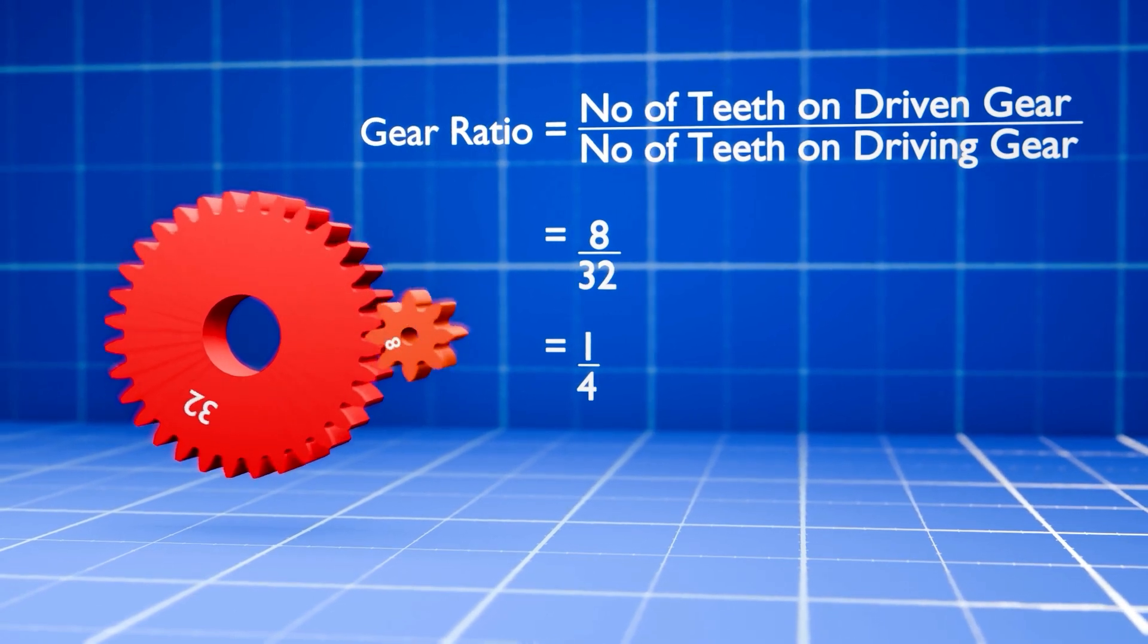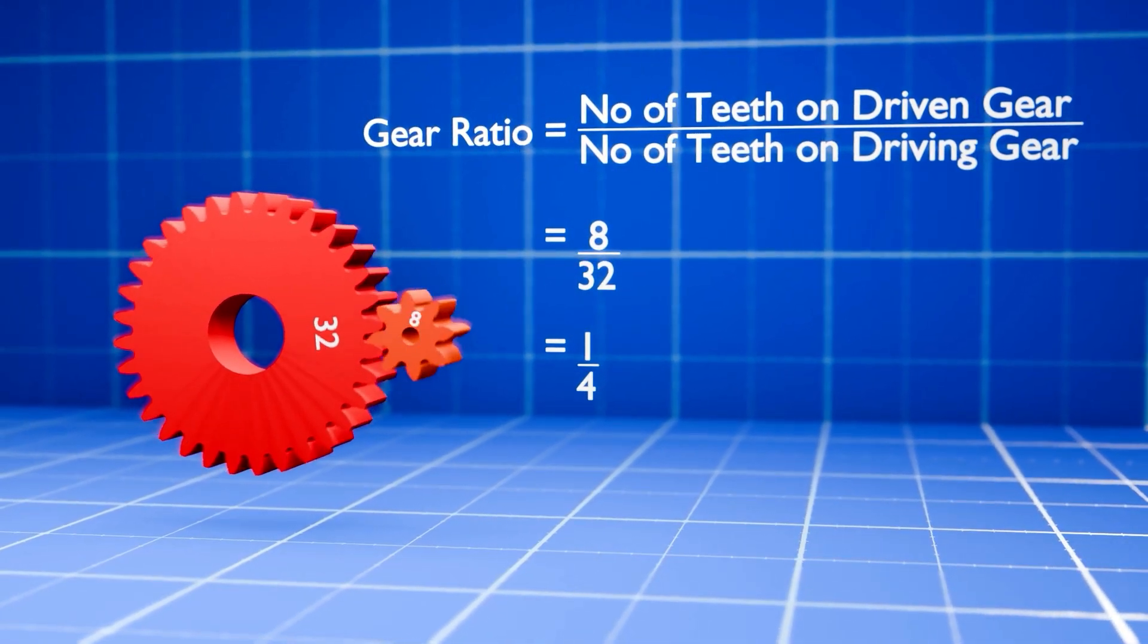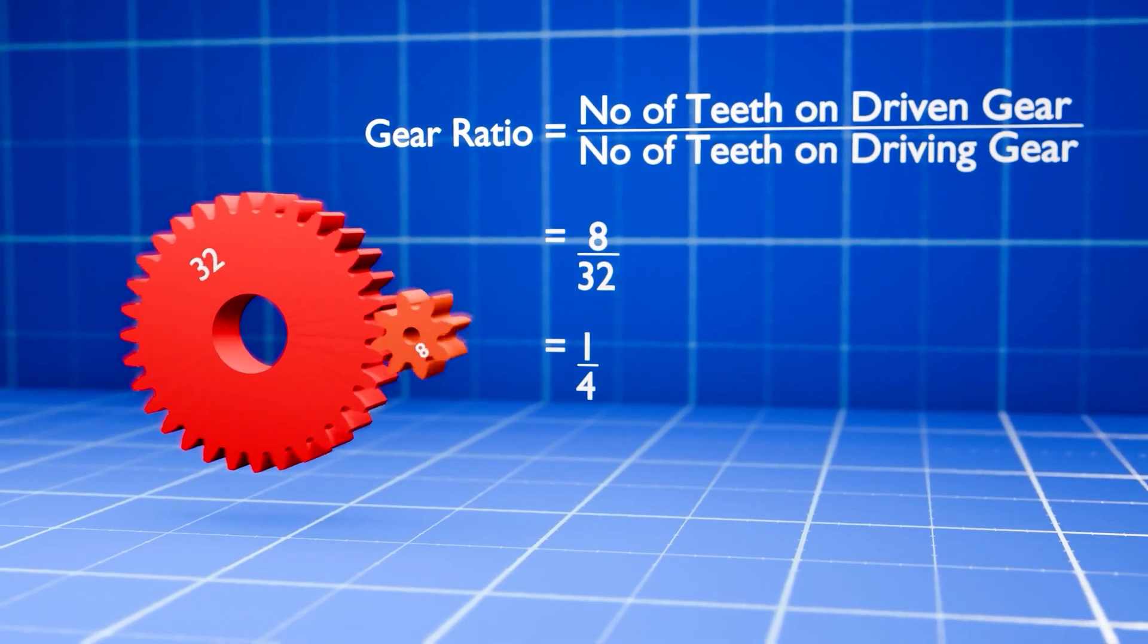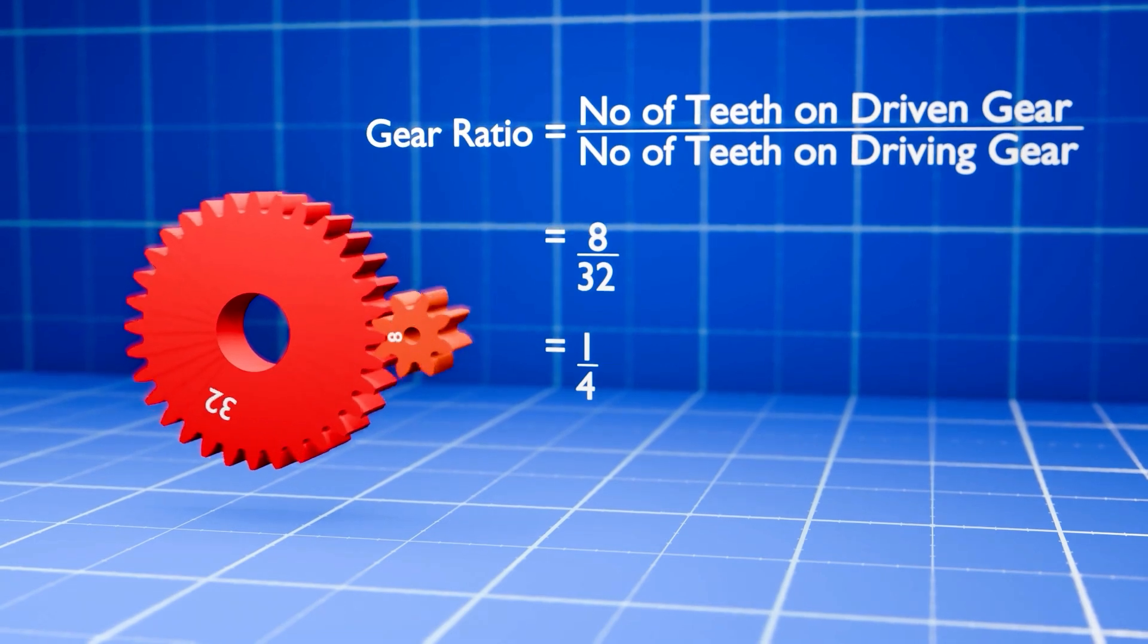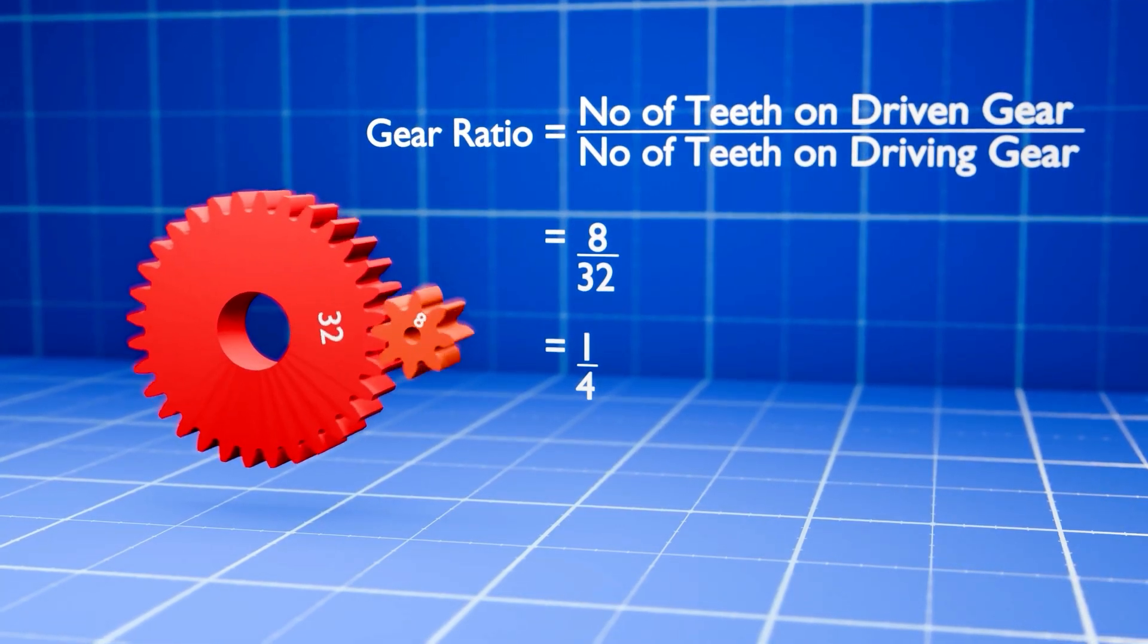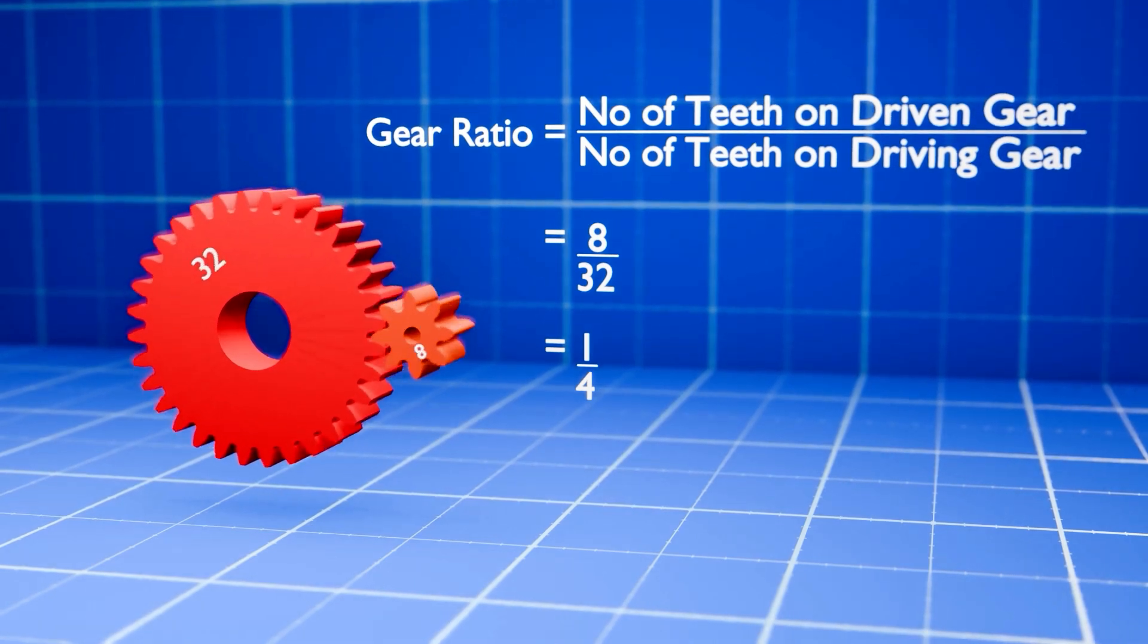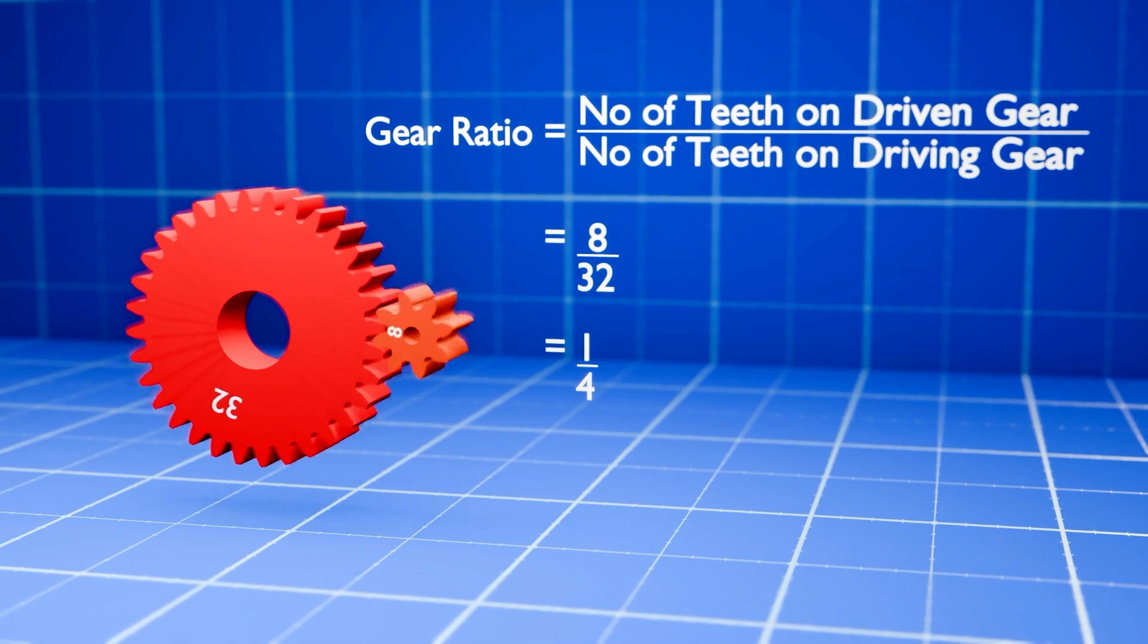The gear ratio determines how the speed or force is adjusted in a gear system. To find the gear ratio, you simply look at how many teeth each gear has. Gear ratio equals number of teeth on driven gear divided by number of teeth on driving gear. In our example, the driven gear has 8 teeth and the driving gear has 32 teeth, giving us a 1 to 4 gear ratio. That means the small gear will spin 4 times faster than the large one.